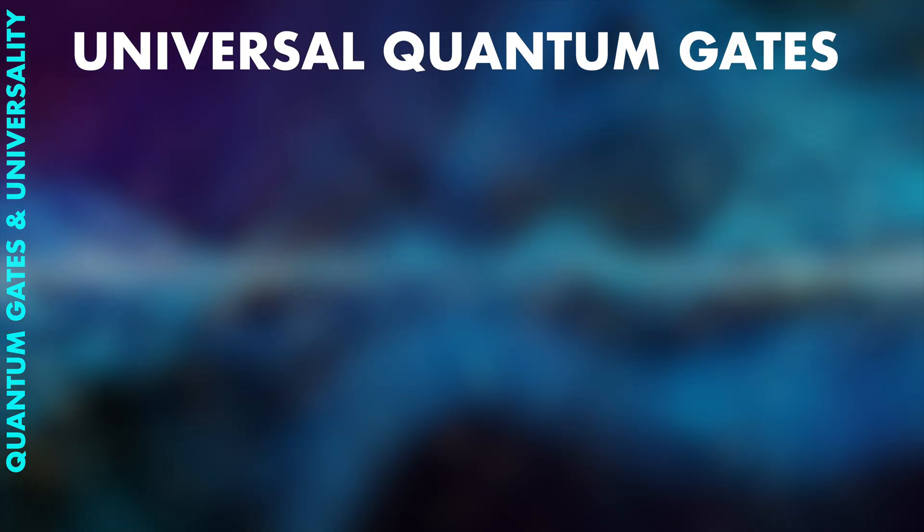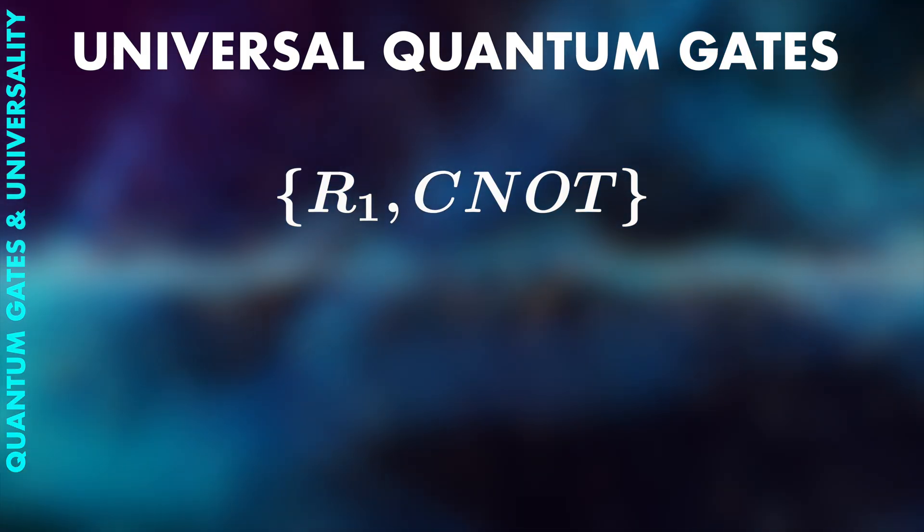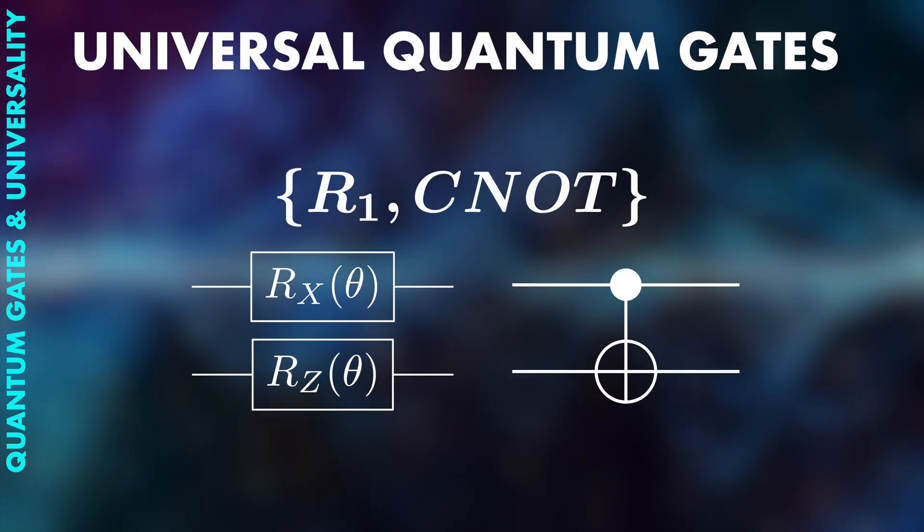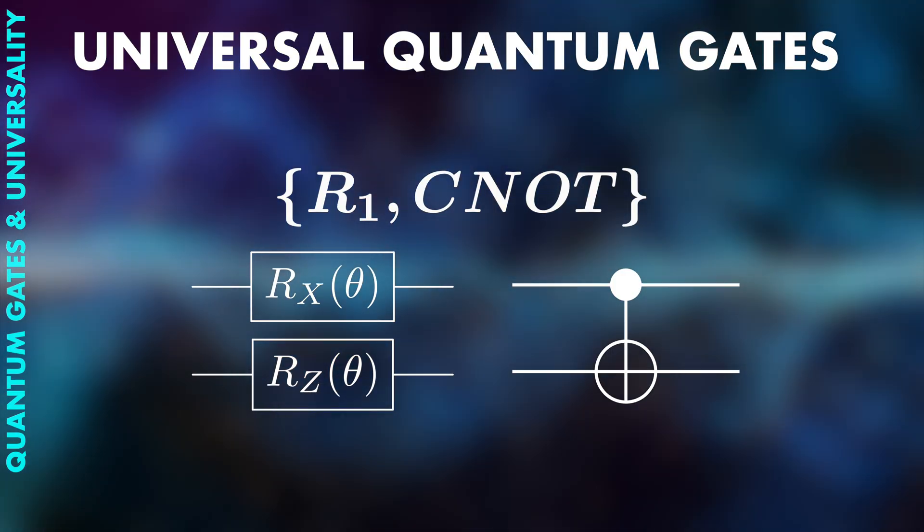There are also universal quantum gates. One universal set is CNOT plus any one qubit rotation. This means that, when we have a quantum computer that can do arbitrary one qubit gates and CNOT, this machine can perform any possible quantum computation. In theory. And this was some of the results that made people realize that we might actually have a shot at building quantum computers.